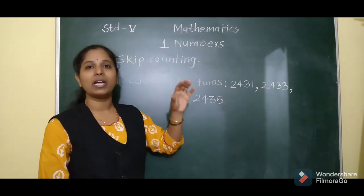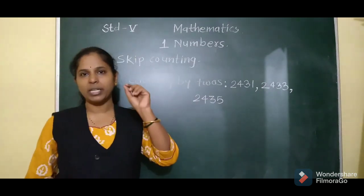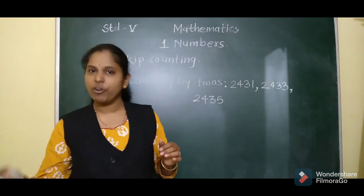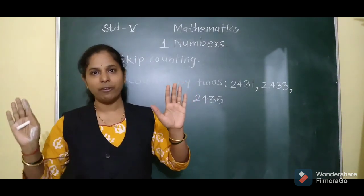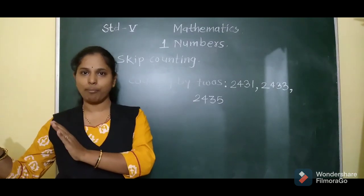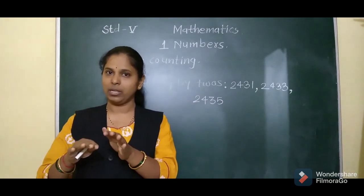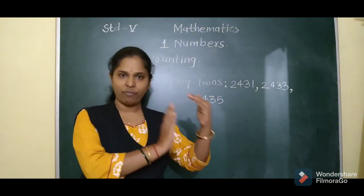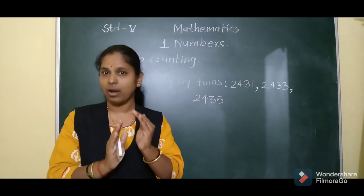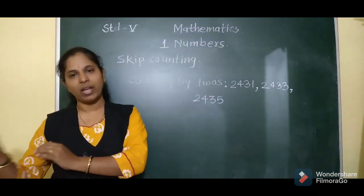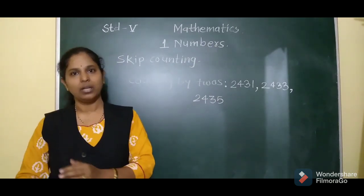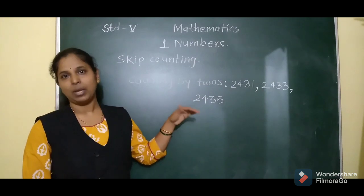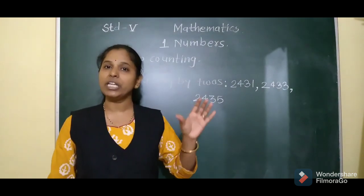Counting by 10's: suppose the first number is 5. Then the next number will be 5 plus 10 equals 15. After 15, again there is a gap of 10, so 15 plus 10 equals 25, then 35, and so on. There is a gap of 10 between each number. Similarly, for counting by 100's, we have to add 100 in the given number each time, so there will be a gap of 100 between each number.